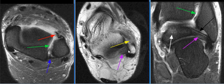The posterior talofibular ligament and the tibial slip are intact, as seen here with a black and a purple arrow.